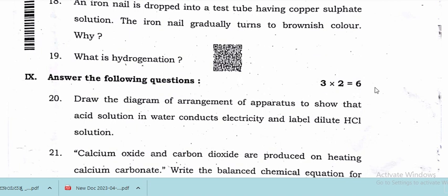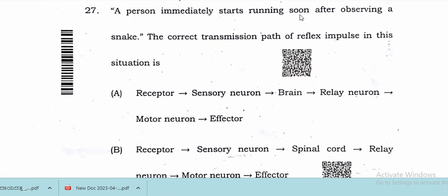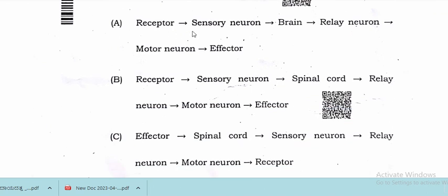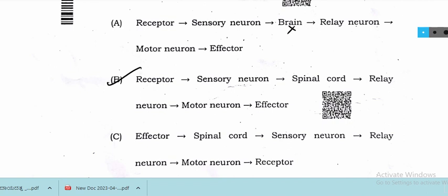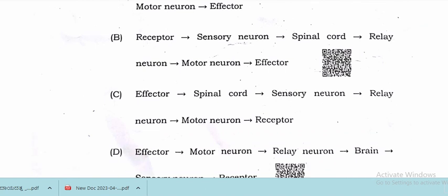In biology: a person immediately starts running after observing a snake. The correct transmission path of the reflex impulse is: receptor → sensory neuron → spinal cord → relay neuron → motor neuron → effector. Note that the brain is not involved in this reflex process. Option B is the correct answer.